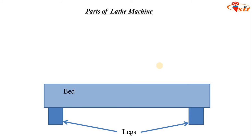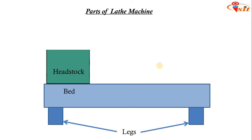Next is the headstock. It is held permanently at the left-hand end of the lathe bed and provides the mechanical means of rotating the work at multiple speeds. The driving mechanism for rotation of the work piece is provided at the headstock. It consists of a hollow spindle and a mechanism for driving and altering the spindle speed. All the parts are housed within the headstock casing.